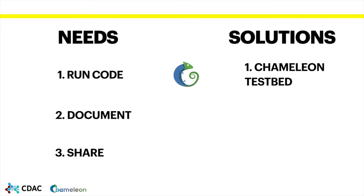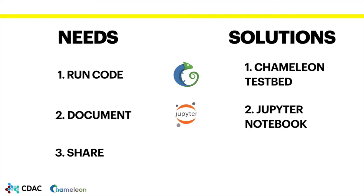Chameleon solves these problems by providing access to different types of hardware, storage, and networking configurations. It integrates with Jupyter Notebook to combine code, text, and visualizations, and it enables uploads to Zenodo, an open access repository for storing code and data, which also provides a DOI for easier sharing.